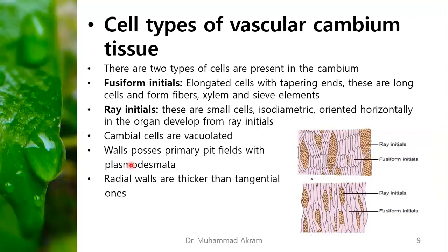There are two types of cells present in the vascular cambium: the fusiform initials and the ray initials. The fusiform initials are long, elongated cells with tapering ends that form fibers, xylem, and sieve elements when they divide. The ray initials are small, isodiametric cells oriented horizontally. Cambium cells are vacuolated; walls possess primary pit fields with plasmodesmata. The radial walls are thicker than the tangential ones.